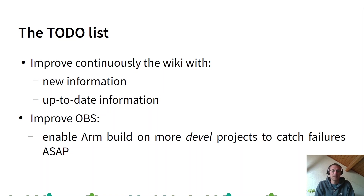It takes time to fix and propagate. If ARM is enabled in the development project, the maintainer can see the build failure before submitting it to Factory.